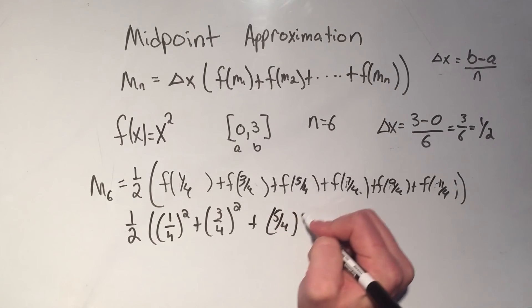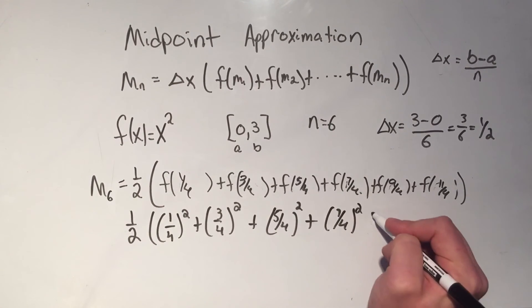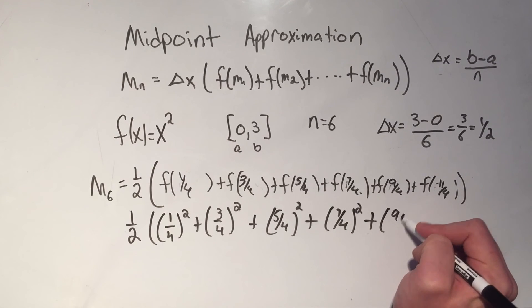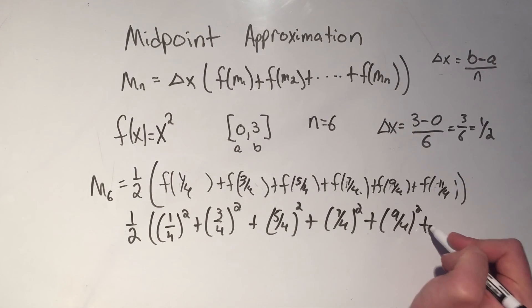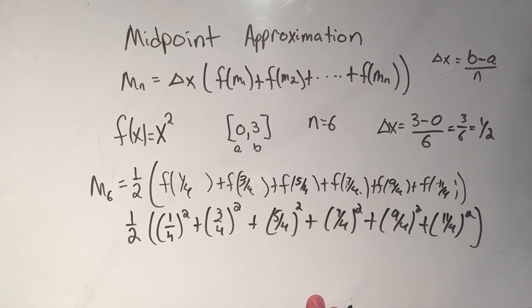Plus 5 fourths squared plus 5 fourths squared plus 7 fourths squared plus 9 fourths squared plus 11 fourths squared. Now I'm not going to actually do that. You can plug it into the calculator and actually see what you would get. But this number, when you plug it into the calculator, that will be your answer for your midpoint approximation.